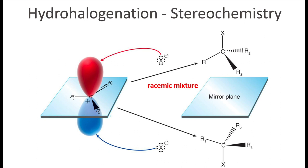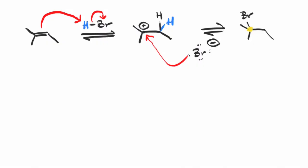Going back to a prior example: does that product have enantiomers? Notice that since the bromine is added to a carbon that is not a chiral center, a racemic mixture is not created — two enantiomers aren't produced, and just one molecule will be formed.